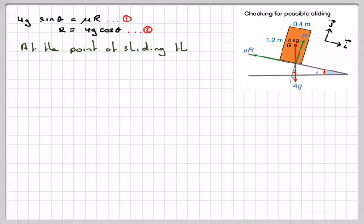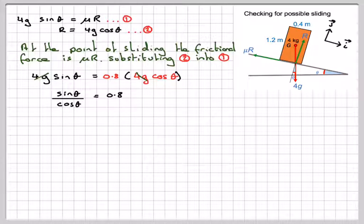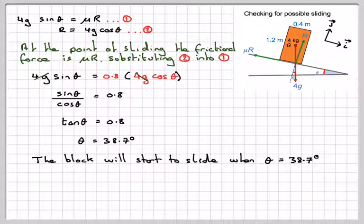At the point of sliding, the frictional force is mu r. Substituting equation 2 into 1, we're going to have that 4g sin theta is going to be equal to mu, which was 0.8 given in the question, and r from here, which is 4g cos theta. The 4g's will cancel out. And then you have sin theta over cos theta is equal to 0.8, that's tan theta equals 0.8. Tan to the minus 1 of 0.8 gives me 38.7 degrees. So the block will start to slide when theta is equal to 38.7 degrees. However, it might have already toppled.